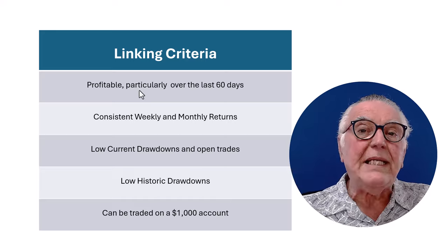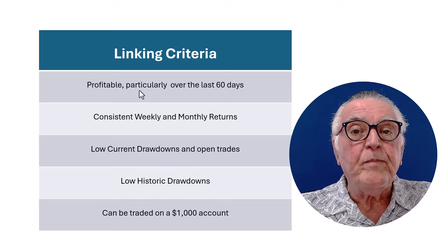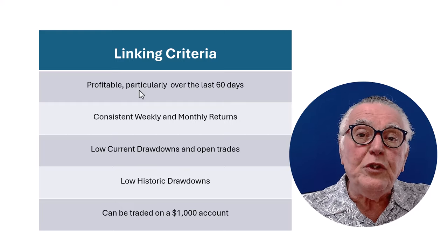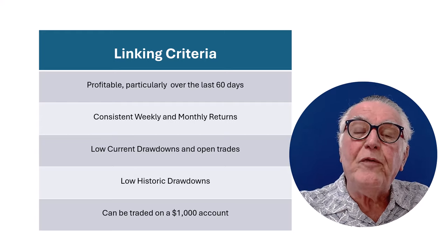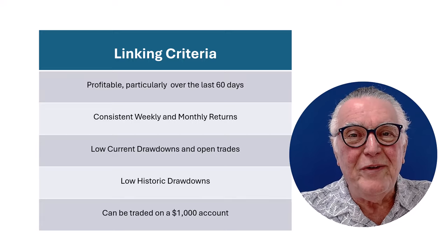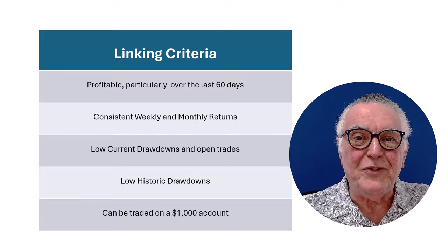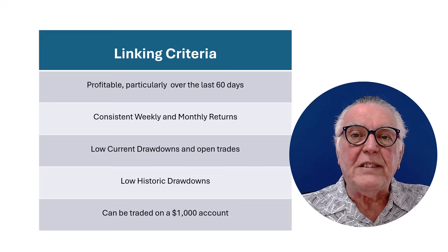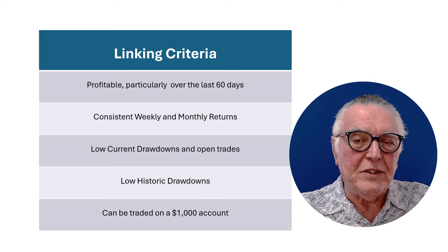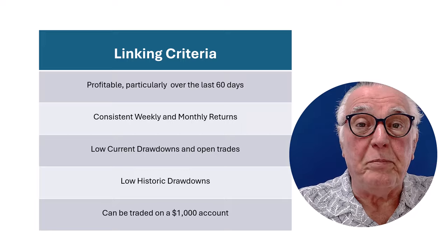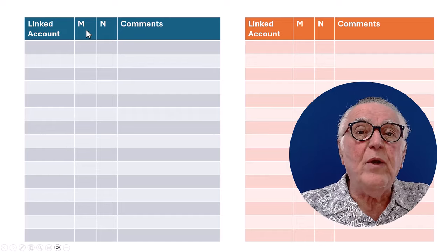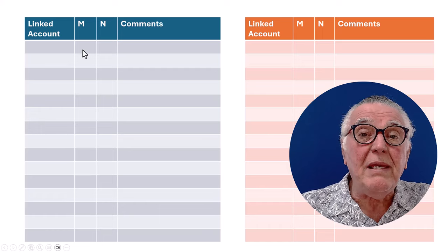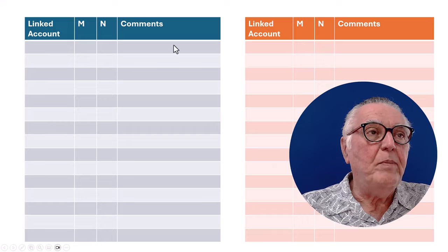I focus on the last 60 days because these accounts are routinely reviewed and changes are made to the settings to provide better risk control and better profitability. History from six months ago is almost irrelevant. As a side note, I'd like to look at accounts that are tradable using $1,000 accounts — not an important factor, but certainly the cherry on top. I've also created a shortlist for this video.